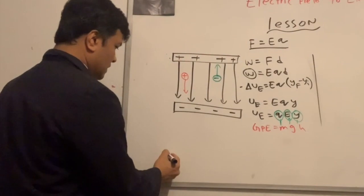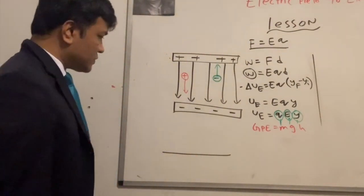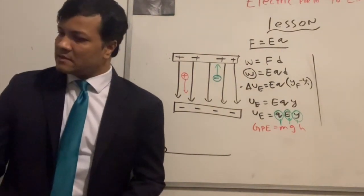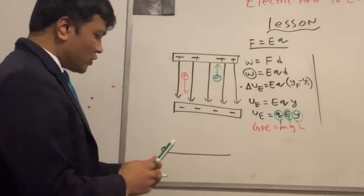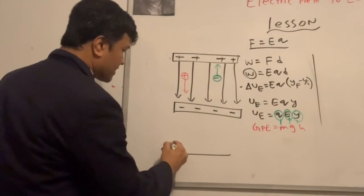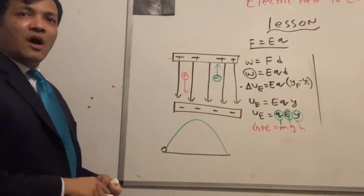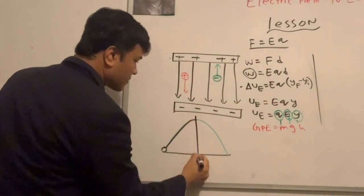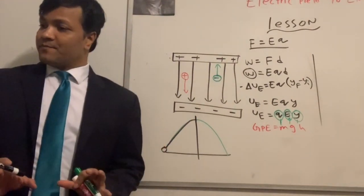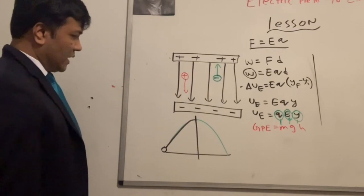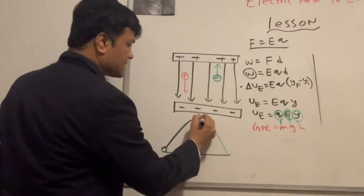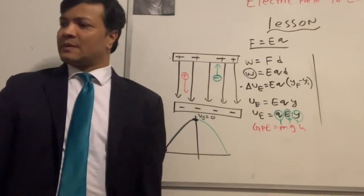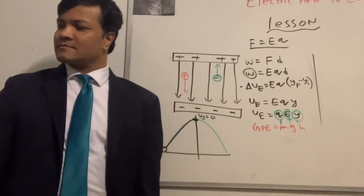Let's use a soccer field analogy. Imagine a soccer ball being kicked — it follows a parabolic trajectory. I'll color the upward half black and the downward half green. At the top of the trajectory, the vertical velocity is zero because gravity has taken over at that point.